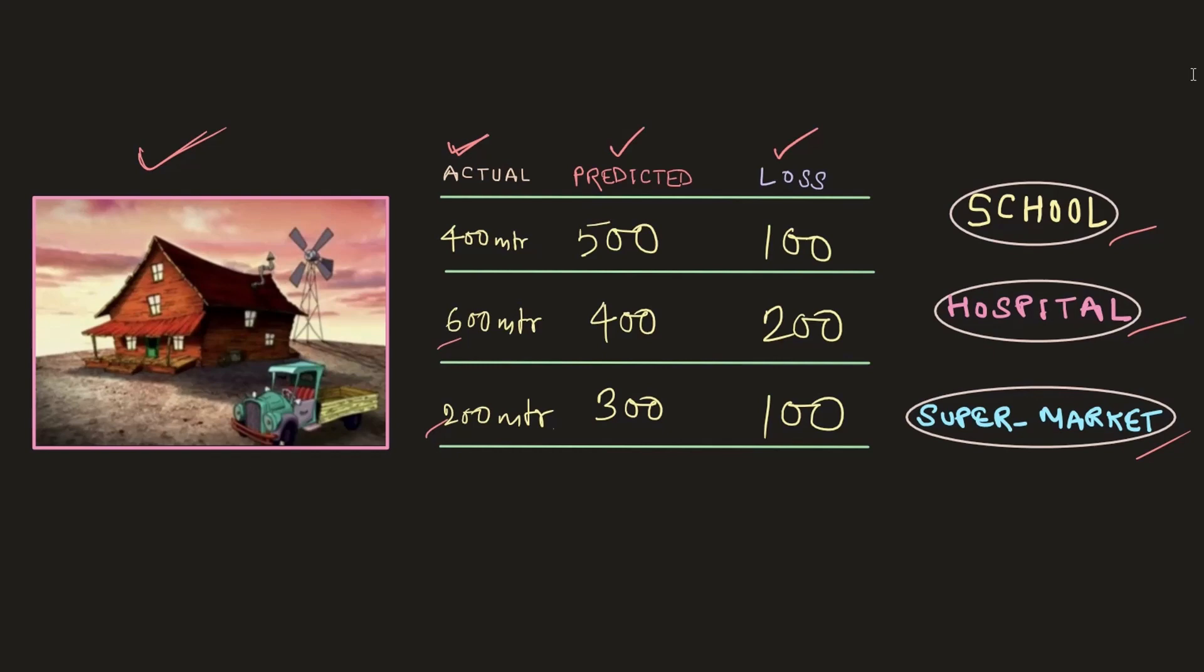In the second column, what we are trying to do is we are trying to guess the distance from this house to these three respective places, assuming that we are not familiar with the actual distance. Let's say the distance that we tried to predict is 500 meters, 400 meters, and 300 meters respectively. And in the third column, which is the loss column, we are taking nothing but the absolute difference between the actual value and the predicted value, which is 100 meters, 200 meters, and again 100 meters respectively for each of these places.